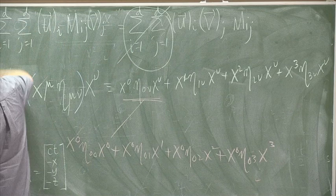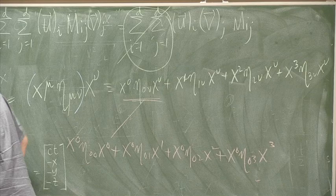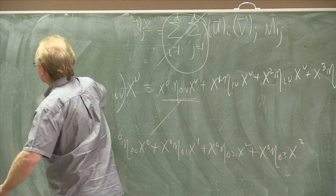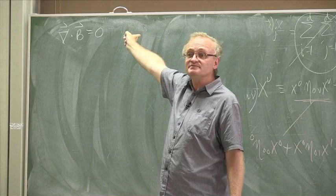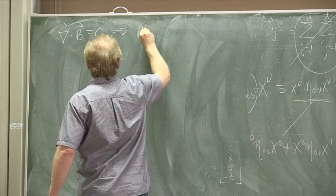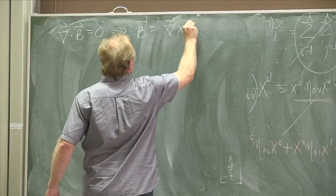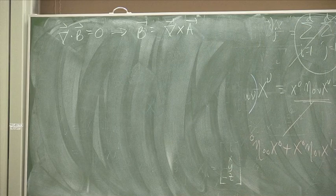Let's go back to electromagnetism and start studying special relativity in that context. We had the divergence of B equal to zero, and this equation told us that B is the curl of A. From this equation we learned that we can write B as the curl of A. What equation told us that we could write E as the gradient of a scalar potential?